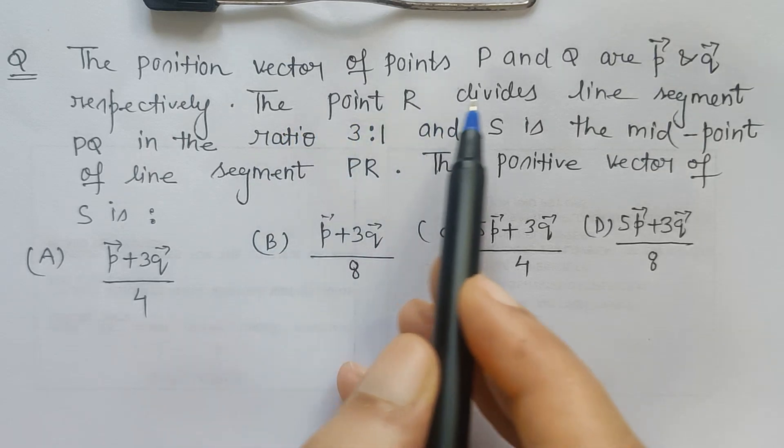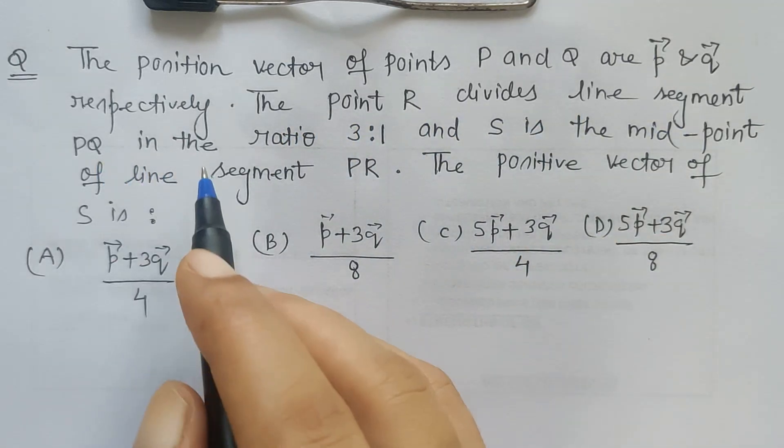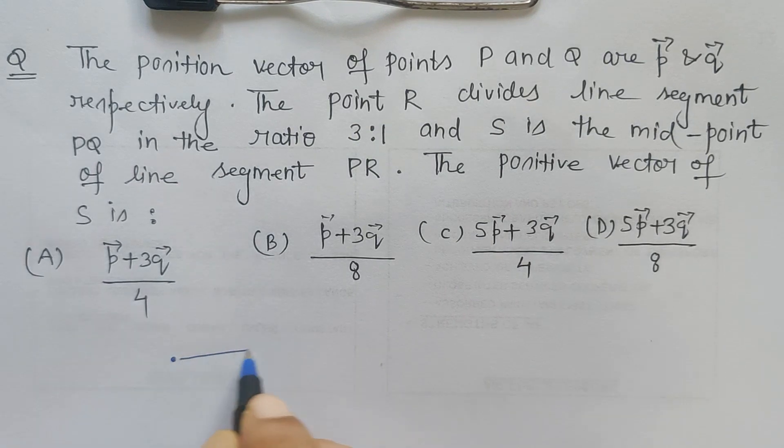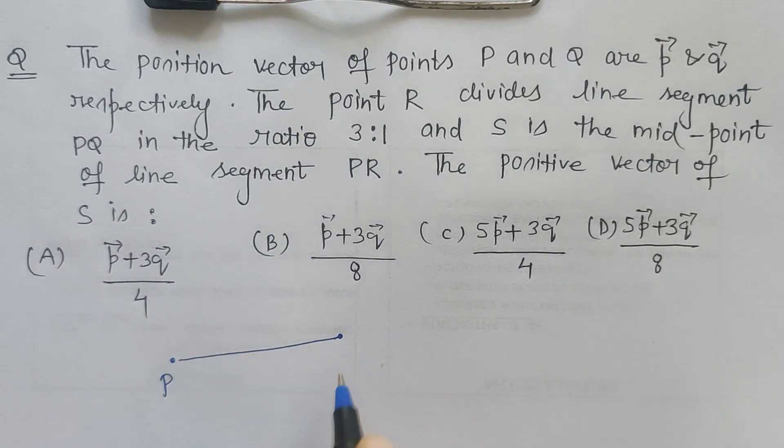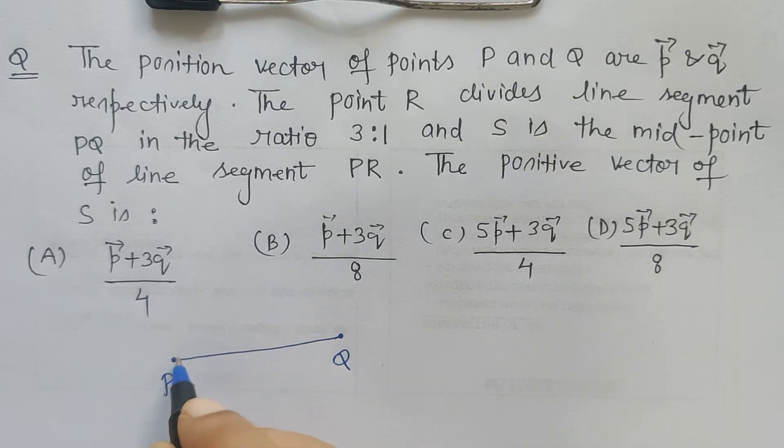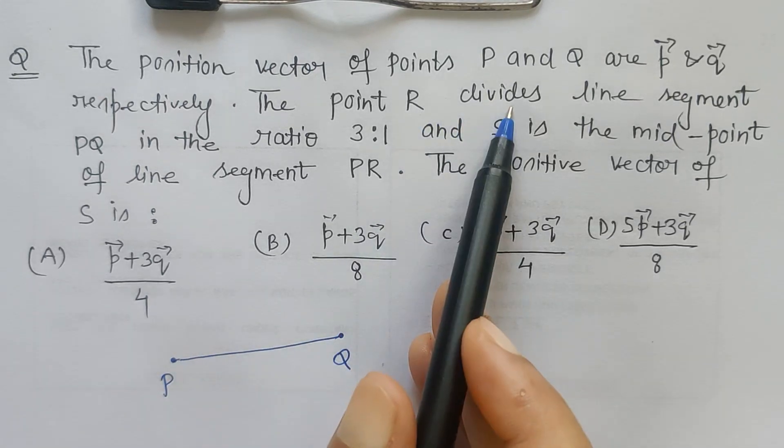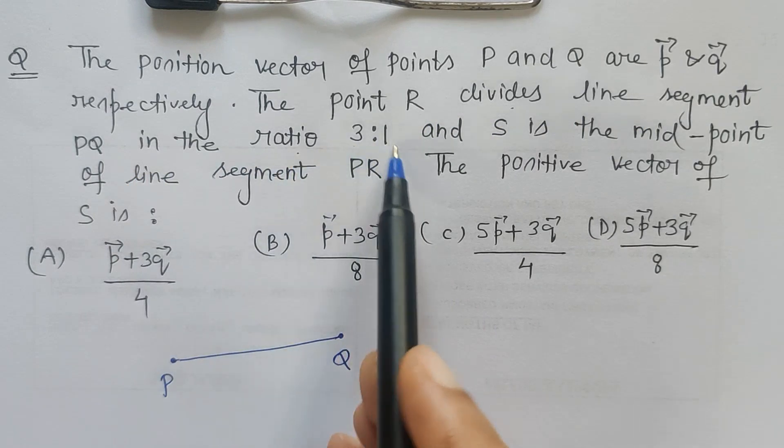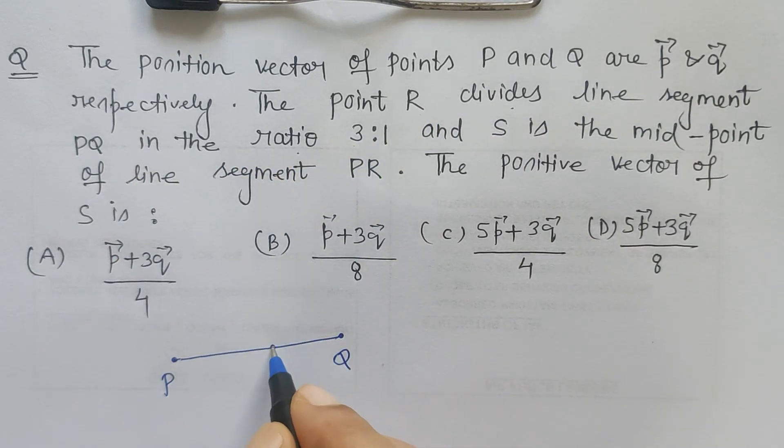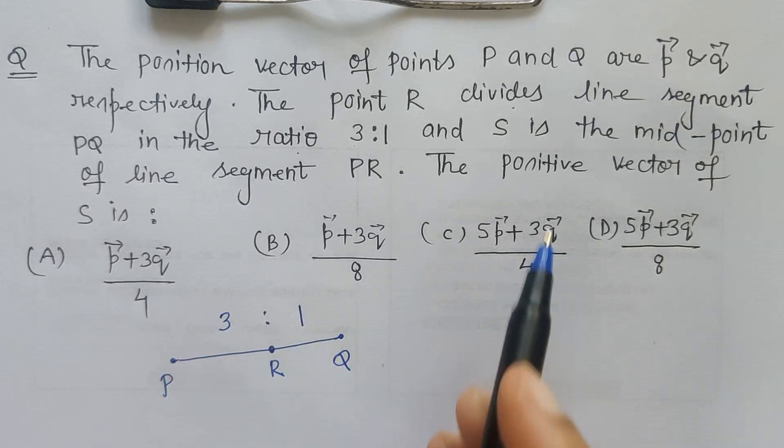The point R divides the line segment PQ. That means PQ is a line segment. So let us draw that line segment. Let us say this is PQ line segment and it is given that R divides the line segment PQ in the ratio 3 is to 1. So let us say R is somewhere here and it divides the line segment in 3 is to 1 ratio.